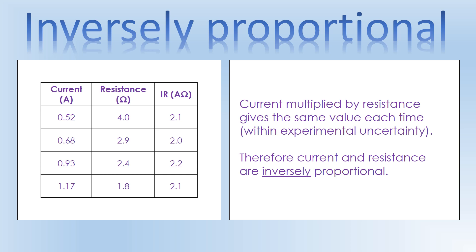For every single row we calculate what IR is. So we've done 0.52 times 4, 0.68 times 2.9, 0.93 times 2.7, and 1.17 times 1.8. I've rounded all answers to two significant figures, since the original data is given to two significant figures. Looking at these values, current multiplied by resistance gives the same value every time - at least within experimental uncertainty. We're not looking for exactly the same value, just very similar values. Because we've got similar values every time, I can now conclude that current and resistance are inversely proportional.